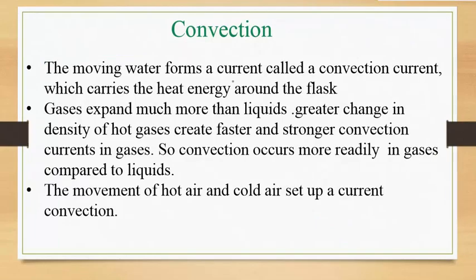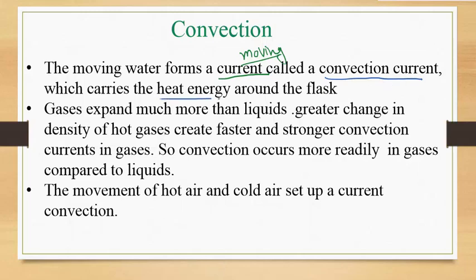The moving fluid forms a current called a convection current. This current means flow — it is not electrical current, it is about the movement of fluid. In convection, the flow of fluid is known as the convection current, which carries the heat energy around the flask — meaning the container in which the liquid is placed.